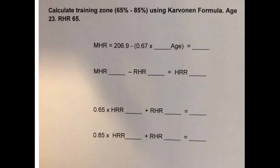Firstly we calculate the maximum heart rate using 206.9 minus 0.67 times the age which in this case is 23. So that gives an answer of 191.49 which we can round to 191 beats per minute.